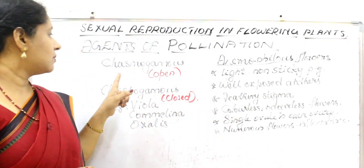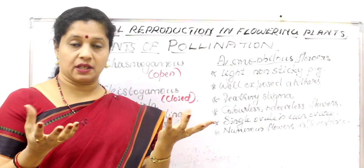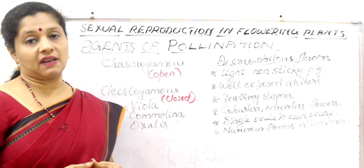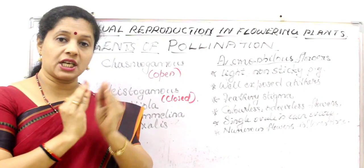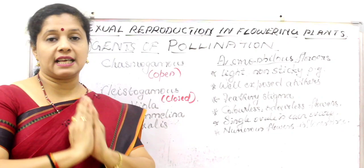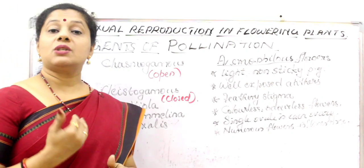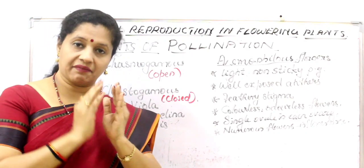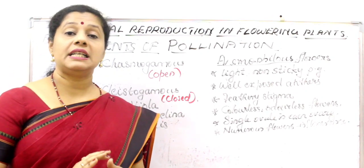There are two different types of flowers. Chasmogamous flowers are flowers that open, exposing their anther and stigma — so both cross-pollination and self-pollination can happen. The second type, cleistogamous flowers, are always closed and never open, so there is no chance of cross-pollination at all. Since the flower does not open, another flower's pollen cannot fall on the stigma, so only self-pollination can happen. Typical examples are Viola, Commelina, and Oxalis. One advantage is that even without any agent, self-pollination will definitely happen, leading to assured seed set — this is a characteristic of cleistogamous flowers.